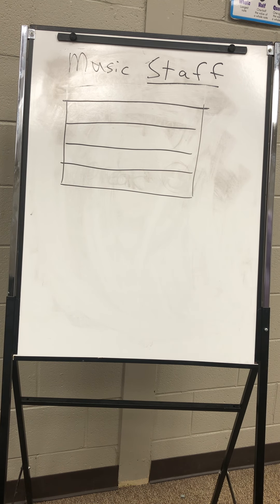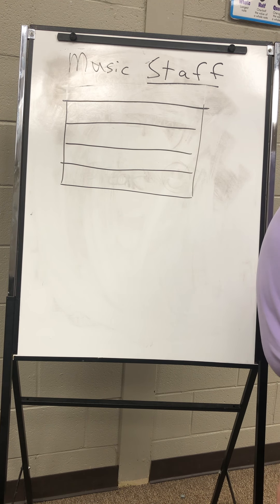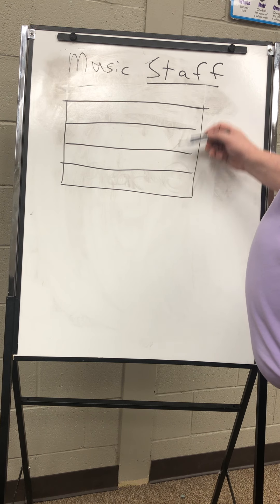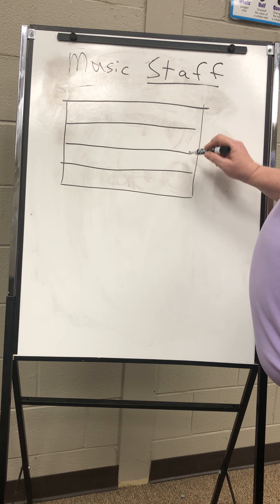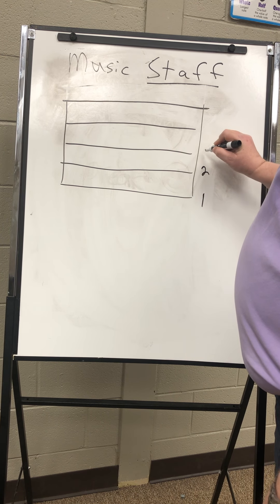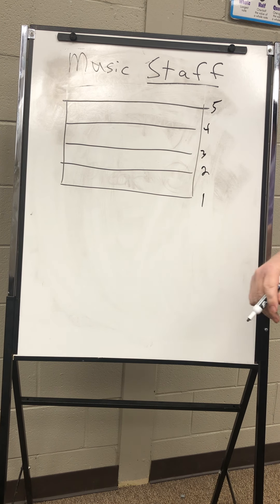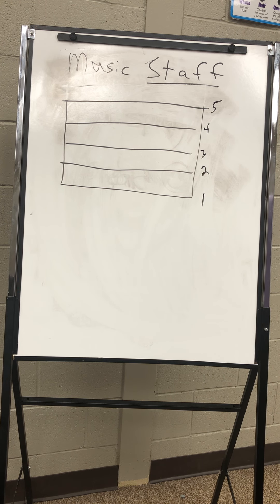Today class, I want to start talking about the musical staff. Of course we've been over this before, so some of this is going to be reviewed. It's very simple. The staff consists of five lines — one, two, three, four, five. When we talk about the musical staff, we always count from the bottom up, so the bottom line is the first line, the next line up is the second line, and so forth.